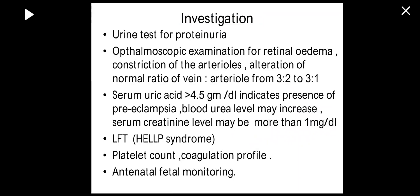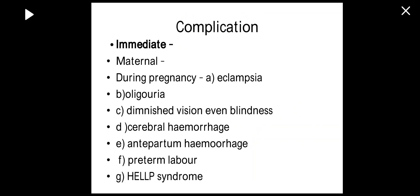Investigations include CBC, urine test for proteinuria, ophthalmoscopic examination for retinal edema and arteriolar constriction, and serum uric acid. Renal function tests should be done — if more than 5 g/dL, blood urea and serum creatinine may be elevated indicating renal dysfunction. Liver function tests, platelet count, coagulation tests should be done, and fetal monitoring frequency should be increased as these patients may develop HELLP syndrome.